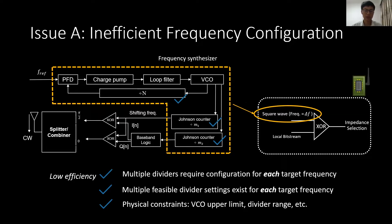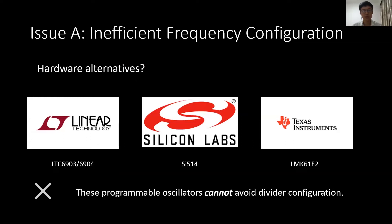There are three problems with this analog design. First, multiple dividers need configuration to generate each output frequency. Second, multiple solutions exist for a single output frequency. Third, when we want to pick one solution, there are multiple physical constraints to take into account. As a result, this one-by-one configuration is laborious and inefficient. We surveyed three types of programmable oscillators from Linear Technology, Silicon Labs, and Texas Instruments, and found that these oscillators still cannot avoid the divider configuration.